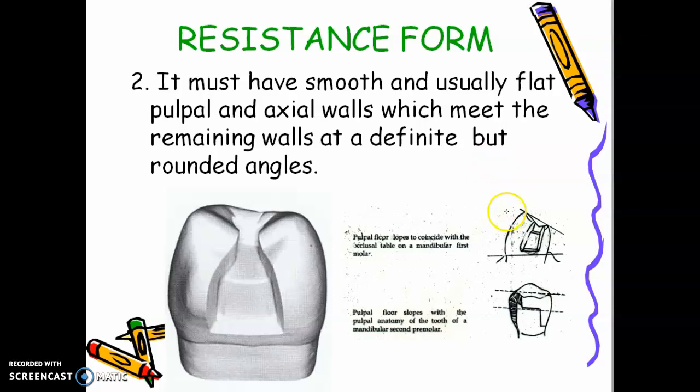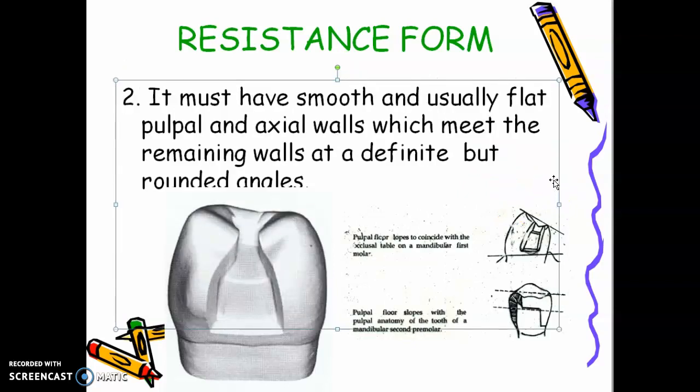So look at this premolar, mandibular first premolar. In this mandibular first premolar, you will see that the pulpal floor follows the slope of the buccal cusp tip to the lingual cusp tip. The pulpal floor has a more prominent buccal pulp horn compared to the lingual pulp horn to prevent accidental exposure of the pulpal horn.